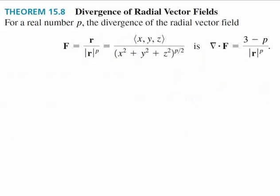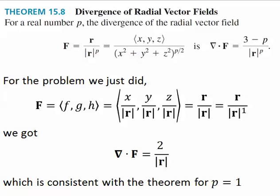In general, for a real number p, the divergence of the radial vector field is 3 minus p over the magnitude of r raised to the p power. For the problem we just did, we got an answer consistent with a value p equals 1.